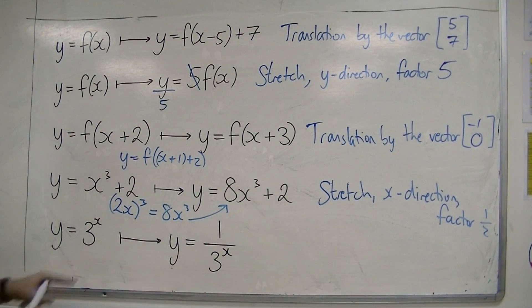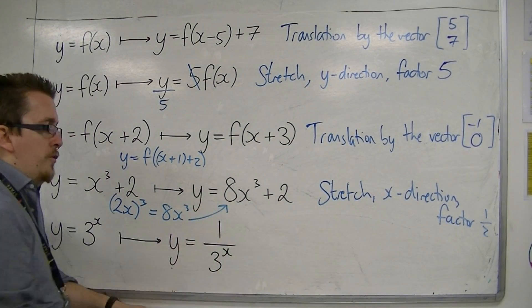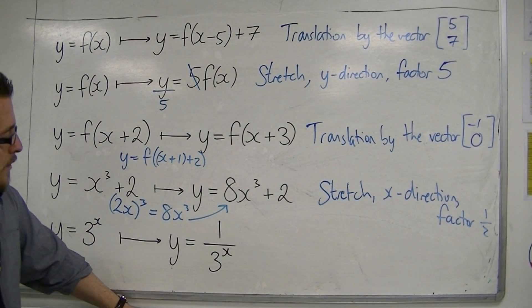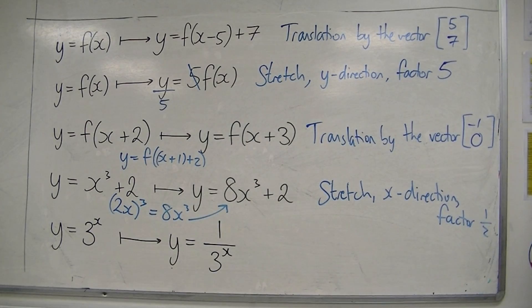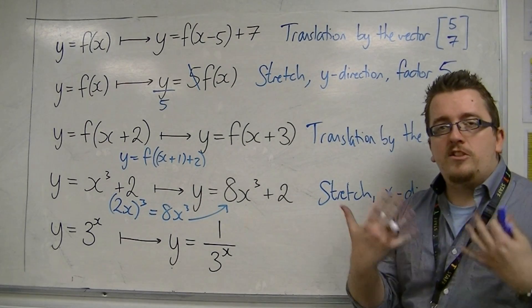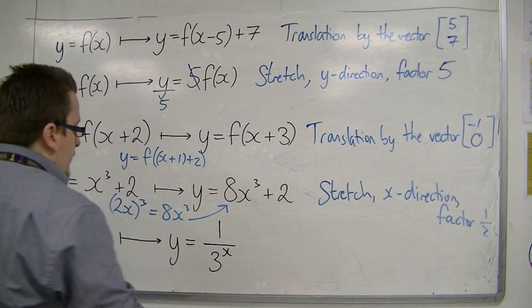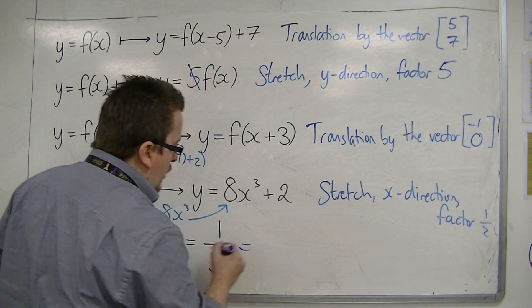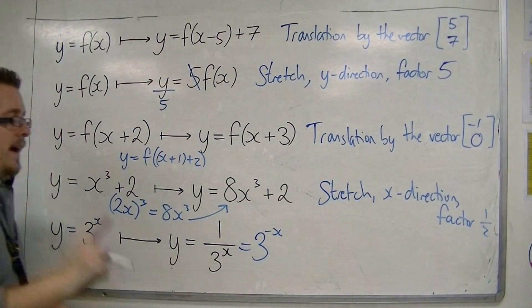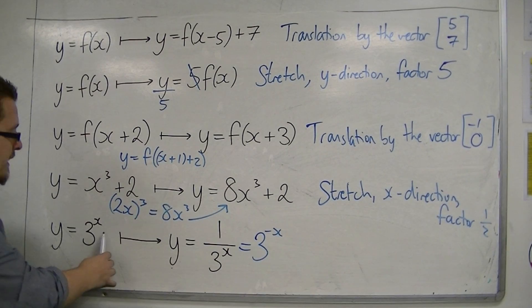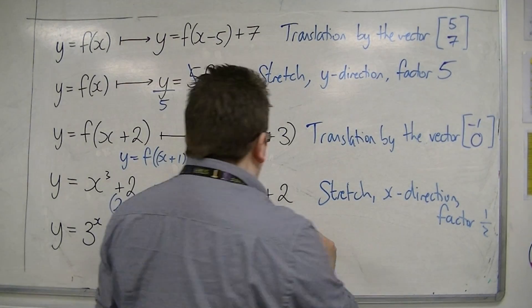And finally, we're going to look at this example. y equals 3 to the x has been mapped to y equals 1 over 3 to the x. Now, this looks a little bit odd. We've got the reciprocal, that's not quite what we've expected. However, in disguise, you can rewrite 1 over 3 to the x as 3 to the minus x. And now it should become apparent, because the x has been replaced with minus x. So that is definitely a reflection.